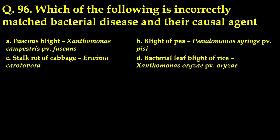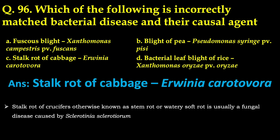The next question: which of the following bacterial diseases and causal agents are incorrectly matched? The correct answer is option C — stalk rot of cabbage with causal organism Erwinia carotovora. Stalk rot of crucifers, otherwise known as stem rot or watery soft rot, is actually a fungal disease caused by Sclerotinia sclerotiorum, not Erwinia carotovora as mentioned in the question.